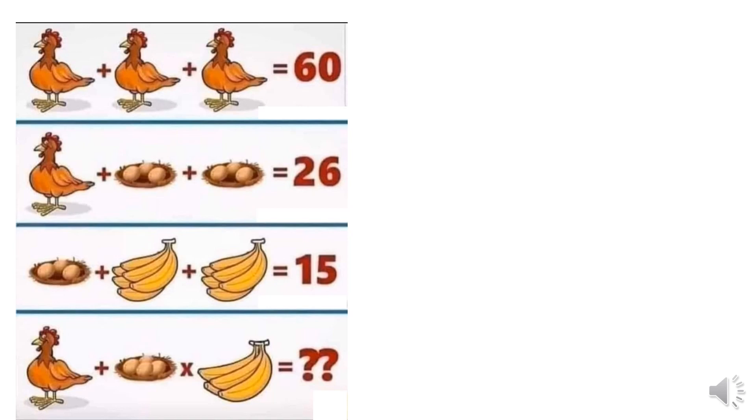Welcome back to another math only genius question. Today we have chickens, eggs, and bananas to solve. So on the first row we have chicken plus chicken plus chicken equals 60. Let's use 20 plus 20 plus 20 will give us 60, so that means each chicken is 20.